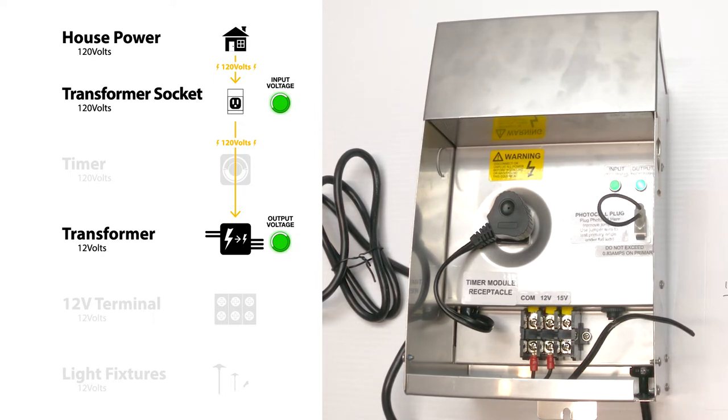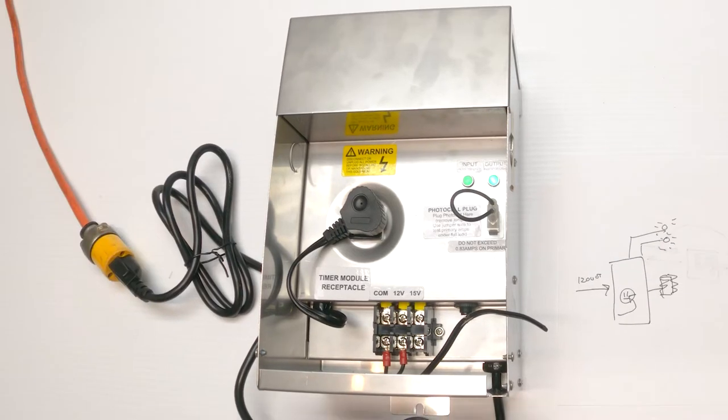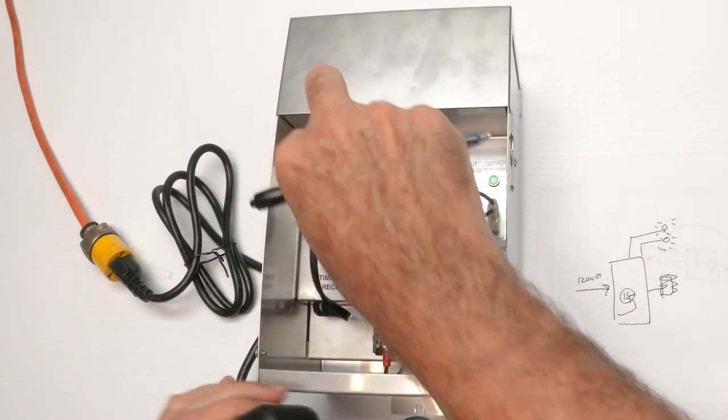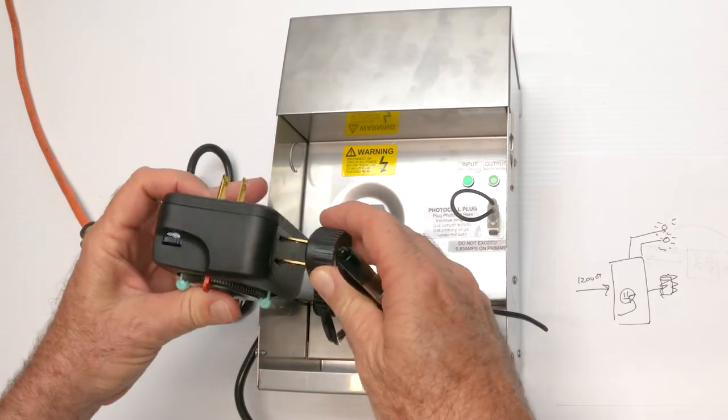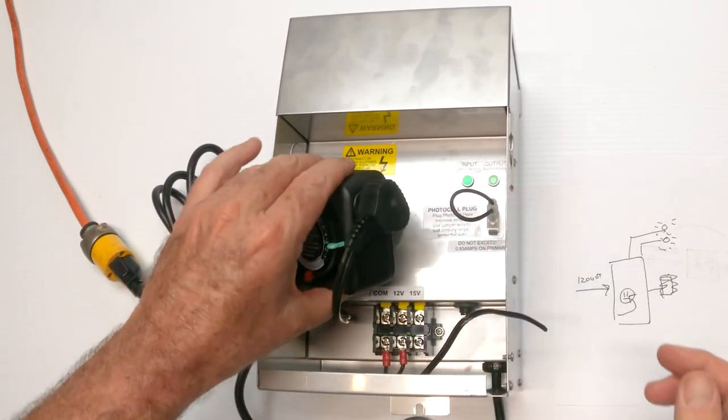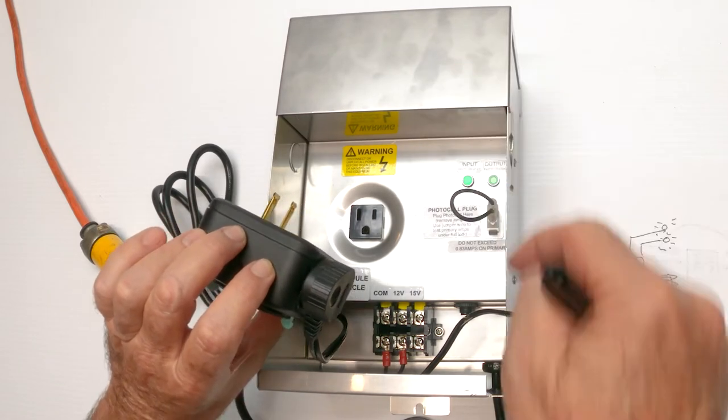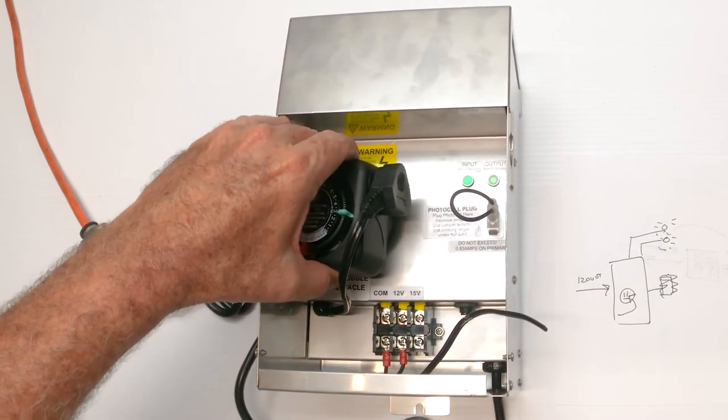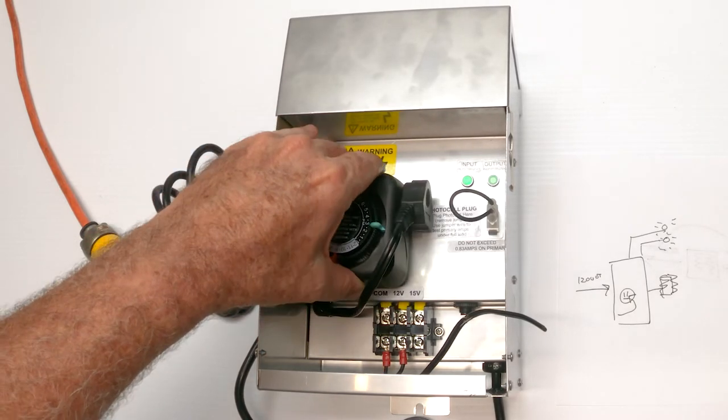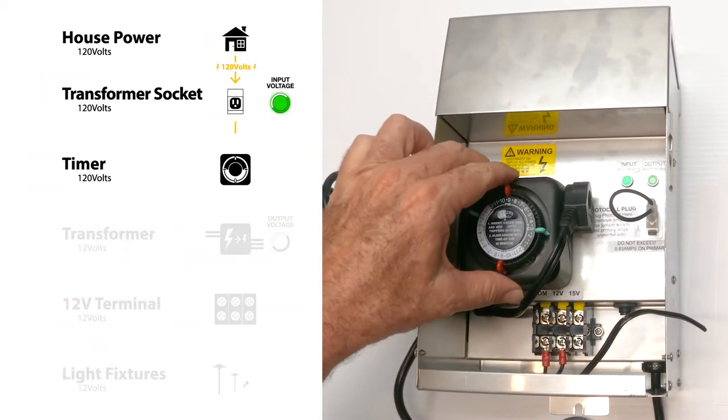Now, let's take a look at the timer itself. I have one right here. I'm going to unplug this. I'm going to plug it into the timer somewhere here. There we go. I'm going to plug the timer into the socket. Oh, if you notice, the output light went out. That's because we're not sending power to the internal transformer at all. So let me plug this in here.